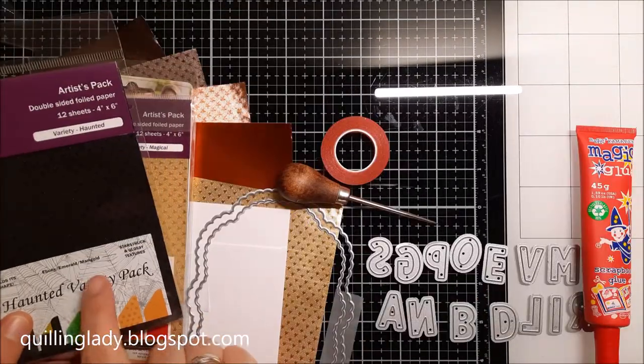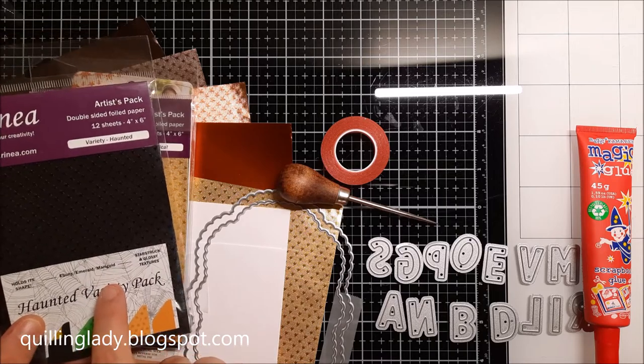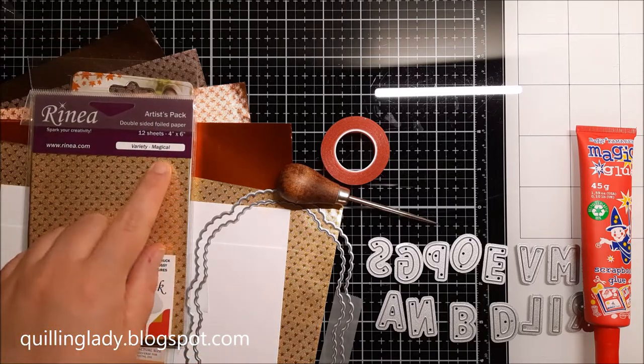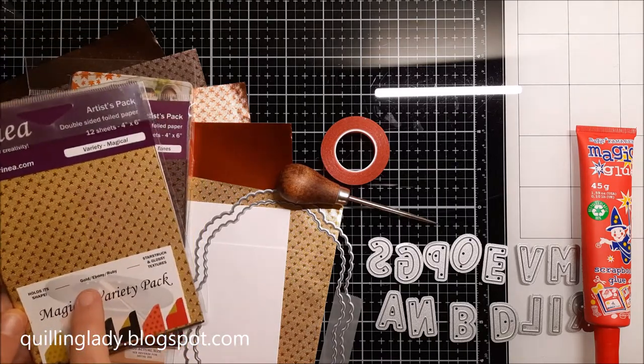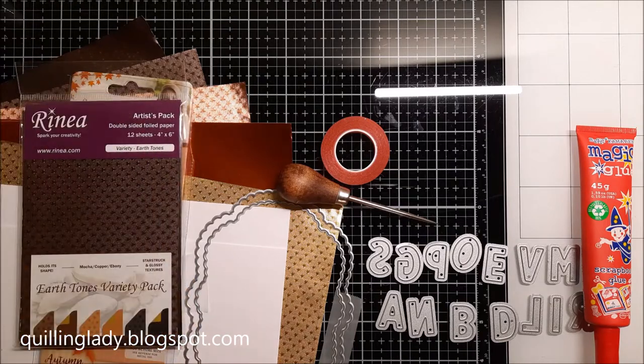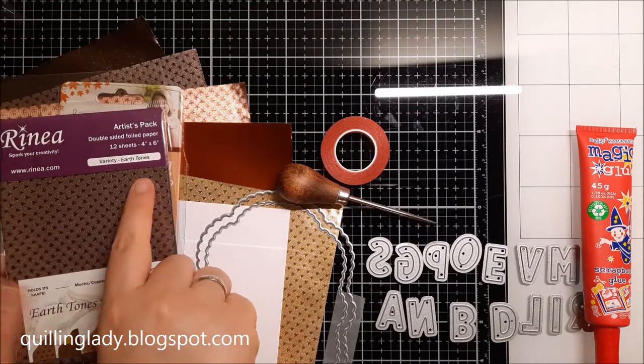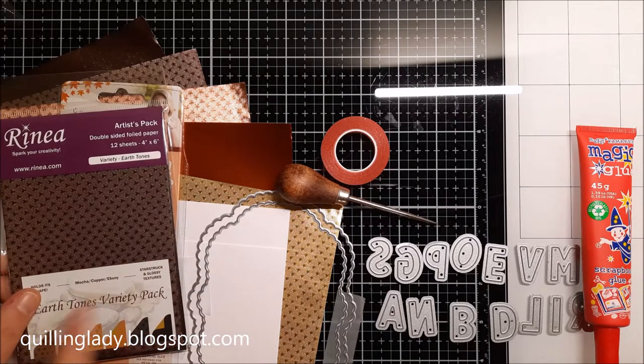Using Rhenia foiled papers from the Haunted variety pack I'm going to use emerald and marigold starstruck, and from the Magical variety pack I'm going to use gold and ruby starstruck foiled papers.